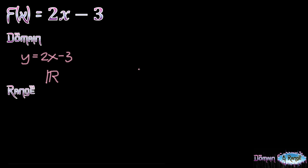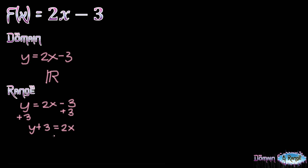To solve for the range of a linear function represented by this equation, we are going to manipulate the equation and solve x in terms of y. Then, we are going to look for the possible values of y such that the value of x will still be real. Starting with y is equal to 2x minus 3, we add both sides by 3 to get y plus 3 is equal to 2x. Then, dividing both sides by 2, we get x is equal to y plus 3 all over 2.